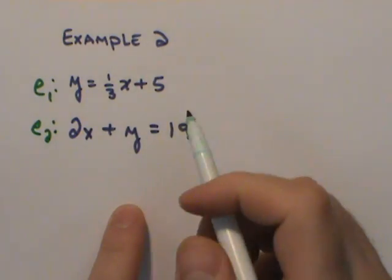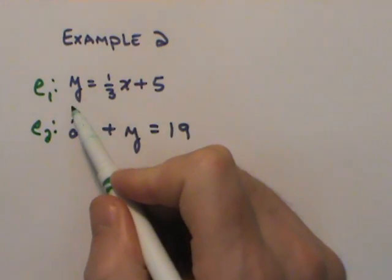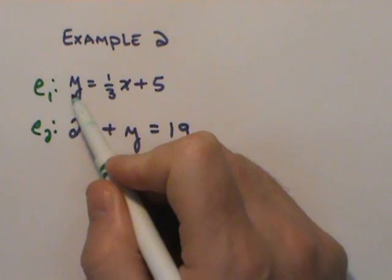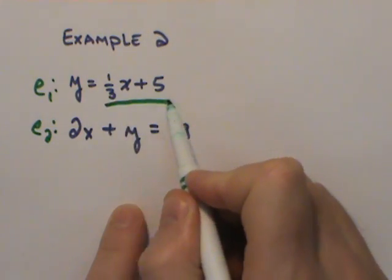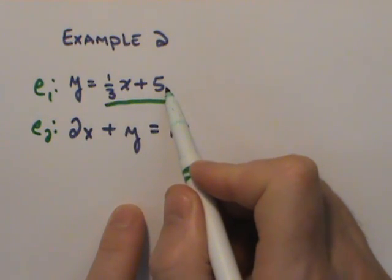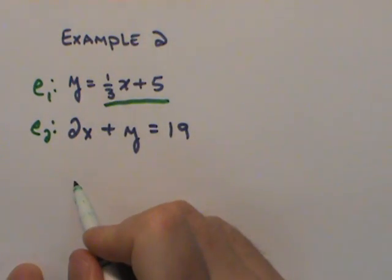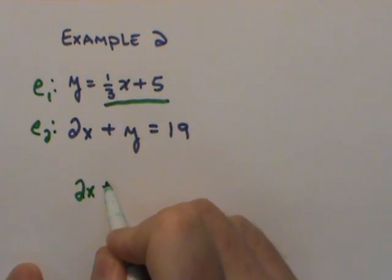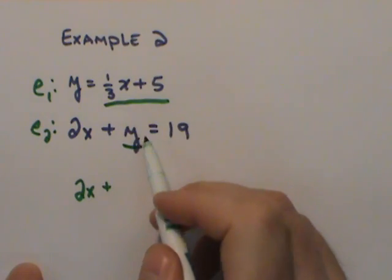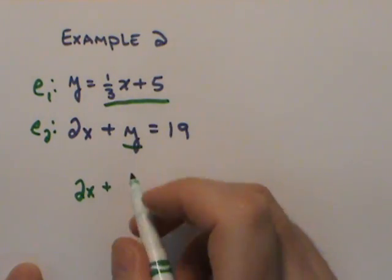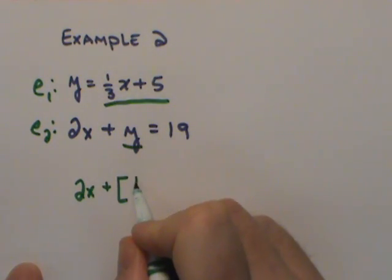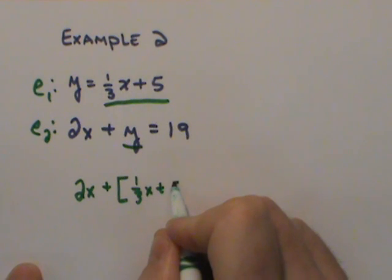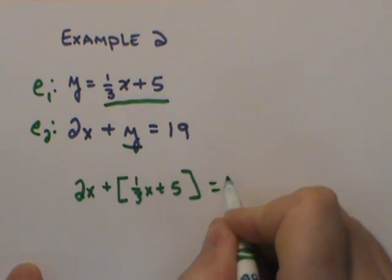In other words, everywhere in the second equation that I see y, I can replace it with one-third x plus five. And so the first thing I'm going to write is two x plus, I'm replacing the y with what it's equal to from the first equation. So I can say one-third x plus five equals nineteen.